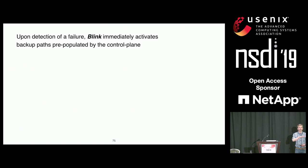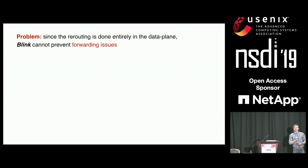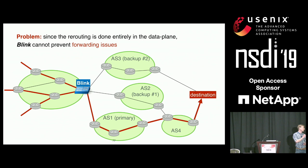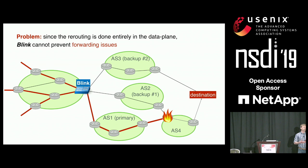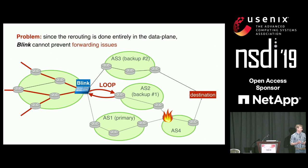Because everything is done in the data plane, Blink cannot prevent some forwarding issues. For example, say we deploy Blink in one of our border routers with three possible next hops. Initially traffic uses the bottom path via IS-1. Now imagine a failure in IS-4 — a remote failure. Blink detects it and reroutes traffic to IS-2, the preferred backup next hop. The problem is that IS-2 is also affected by the failure, so we get a black hole and connectivity is not restored. Worse, IS-2 may have also detected the failure and rerouted traffic back, creating a forwarding loop.